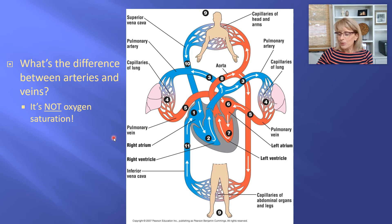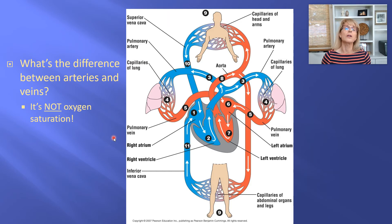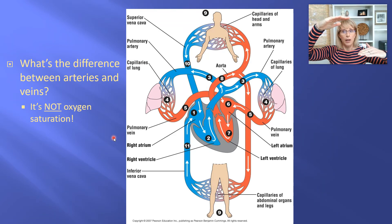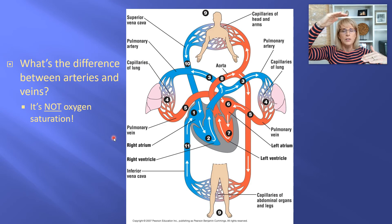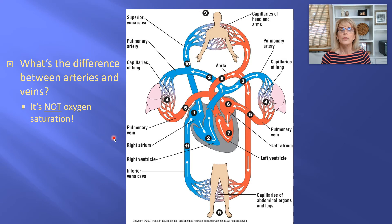Let's talk about the difference between arteries and veins. Hopefully you know that the difference is not oxygen saturation. Yes, it's true — almost all of the arteries in our body have lots of oxygen and very little carbon dioxide. However, there's one set of arteries where everything is backwards: the pulmonary arteries. The pulmonary arteries are low in oxygen and high in carbon dioxide, and the pulmonary veins are backwards too.